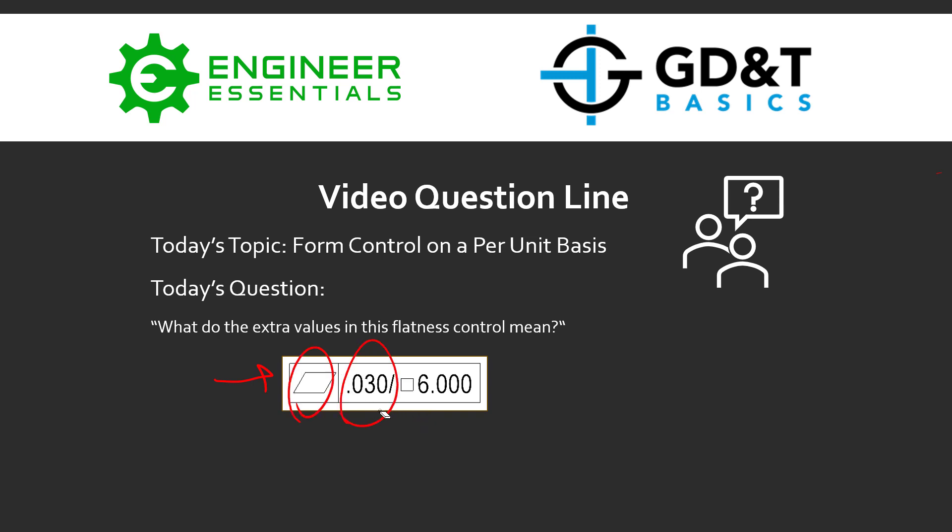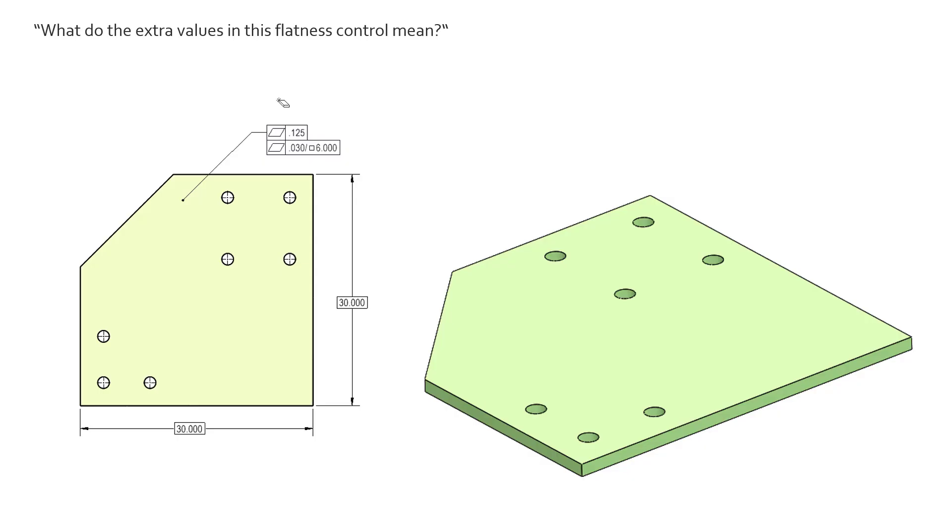So take a look at this feature control frame here. We see a flatness control being called out with 30 thousandths and then some extra information here after our initial tolerance zone value. So what does this feature control frame mean with this added information?